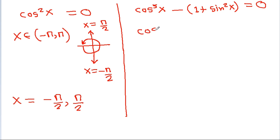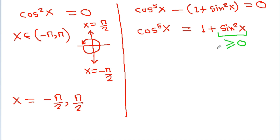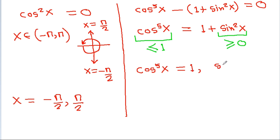For the second case, cos⁵x = 1 + sin²x. Since sin²x ≥ 0, the right side is at least 1, but cos⁵x ≤ 1. So there is only one solution: cos⁵x = 1 and sin²x = 0, with x belonging to minus pi to pi.